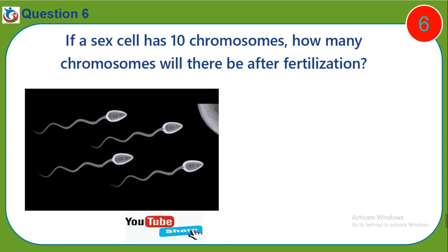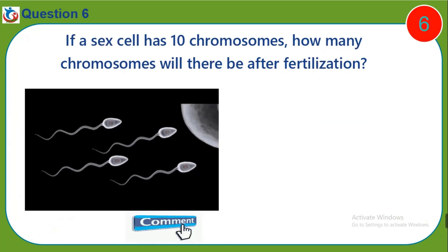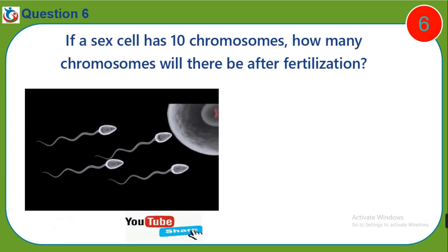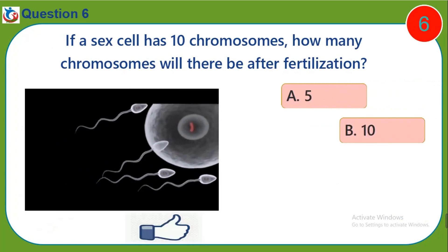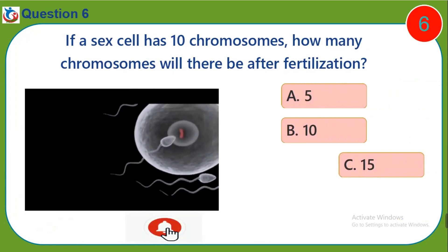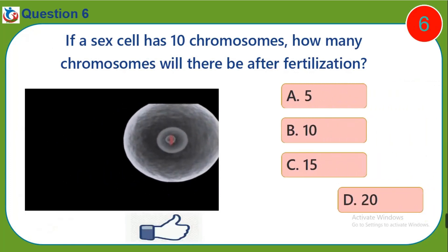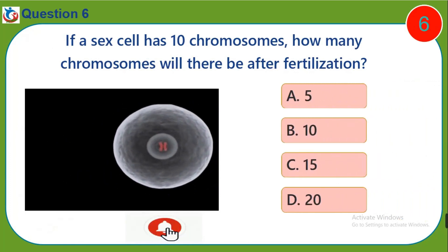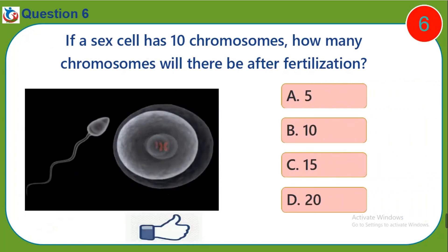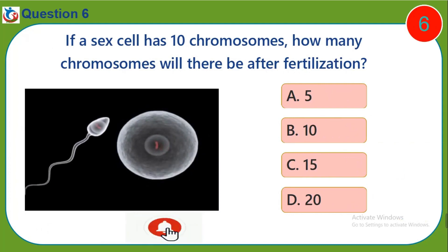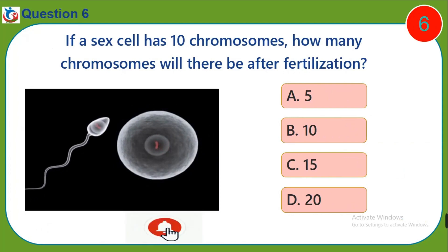Question six: If a sex cell has 10 chromosomes, how many chromosomes will there be after fertilization? a) 5, b) 10, c) 15, d) 20.